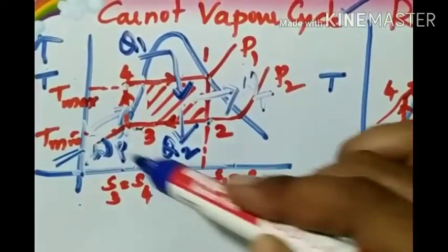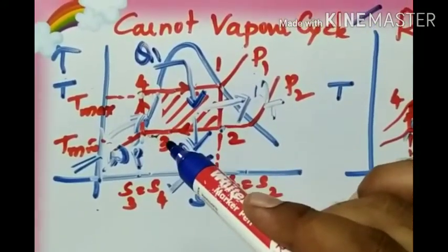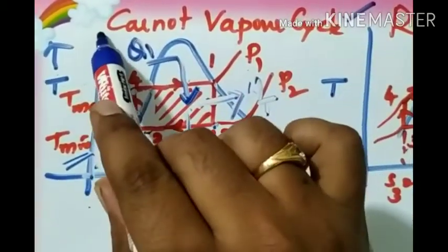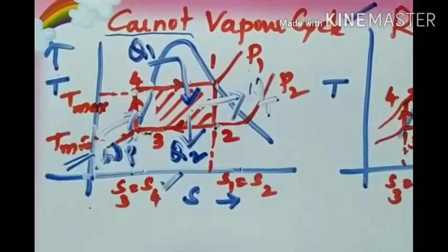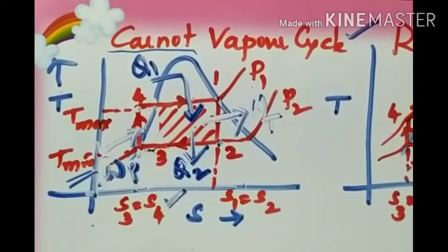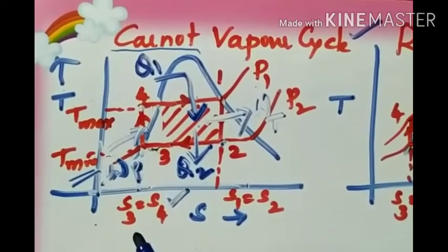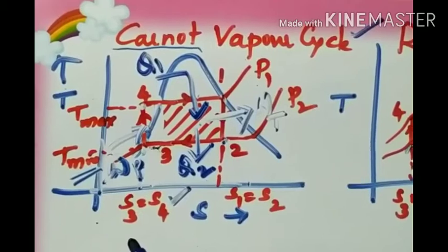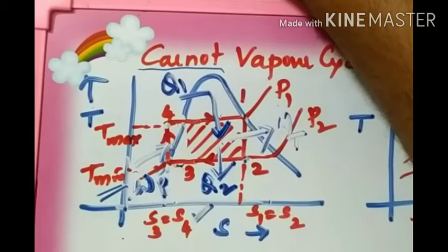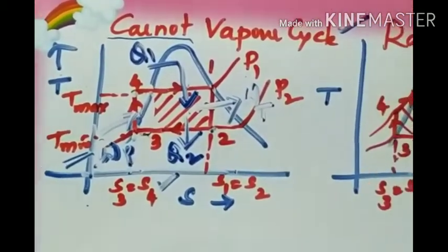Since all four processes are ideal processes, the cycle is an ideal cycle. This was predicted by a scientist called Carnot, hence this cycle is called the Carnot vapor power cycle. We know that whenever there is an ideal cycle, it gives the highest performance — meaning the efficiency of the Carnot vapor power cycle is always higher than any other cycle we are discussing.